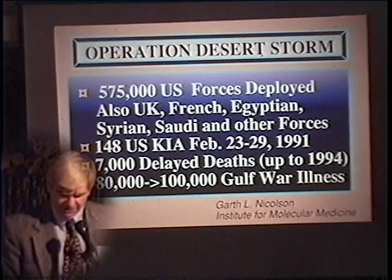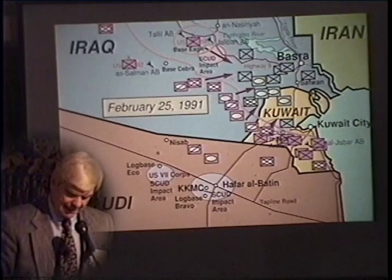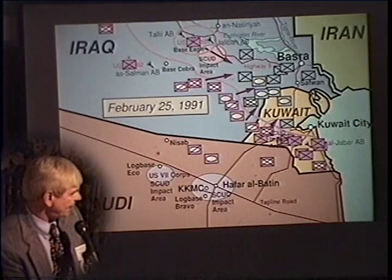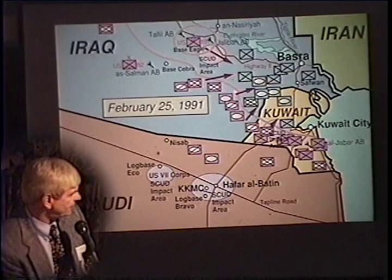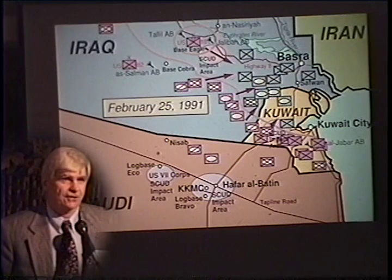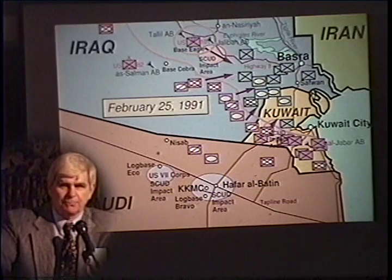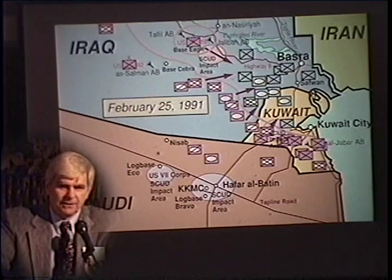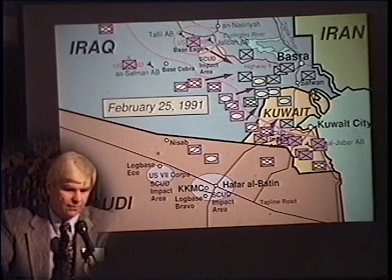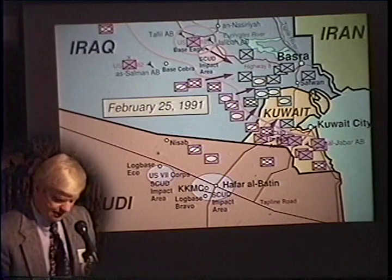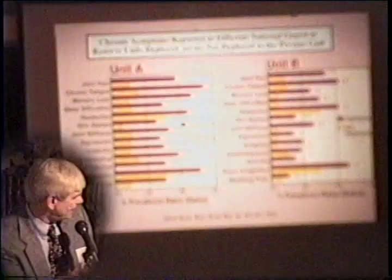You might expect that if you have casualties, they would be in the front-line combat units — mechanized infantry and armored units attacking the Republican Guard. But that's not what happened. Virtually every unit suffered some sort of casualties that we call Gulf War illness, and it did not necessarily occur in the combat units. In fact we think there were fewer casualties in the combat units than in the non-combat units — command, control, transportation, and supply units. We're going to go into how that might have happened.